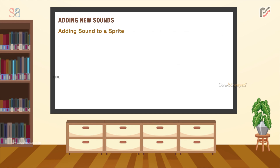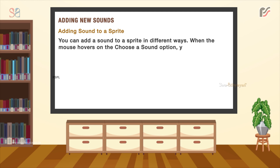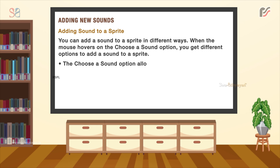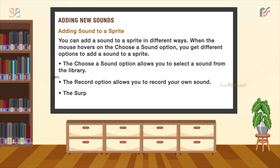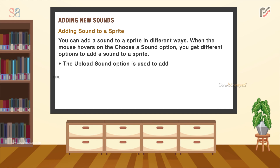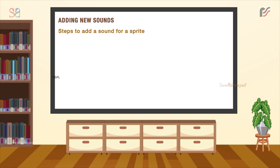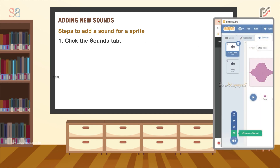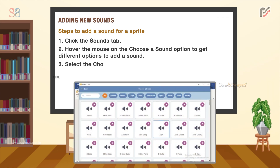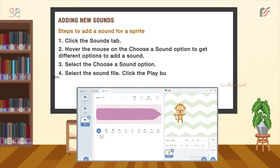Adding sound to a sprite. You can add sound to a sprite in different ways. When the mouse hovers over the 'Choose a Sound' option, you get different options. The 'Choose a Sound' option allows you to select a sound from the library. The Record option allows you to record your own sound. The Surprise option adds a random sound from the library. The Upload Sound option adds a sound saved on your computer. Steps to add a sound: click the Sound tab, then hover the mouse on the 'Choose a Sound' option. Select the 'Choose a Sound' option and select the sound file. Click the play button to listen to the sound before including it in the script.